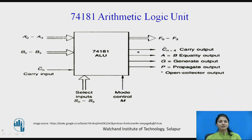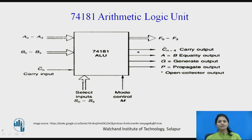Here you can see A0 to A3, which is the first input. B0 to B3 is one more input, and there is an optional carry input. The select inputs S0 to S3 are 4-bit inputs, creating 16 possible input combinations.